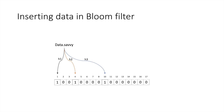Similarly for h3, we set the tenth bit to 1. Now suppose a new user comes whose name is 'savvy.data'. Based on what h1, h2, and h3 return, we set the respective bits. Notice that for savvy.data, h1 gave an output of 10, which was the same output that data.sevi gave for h3. Since the tenth bit was already set, h1 does not set that bit again. This is how we insert data.